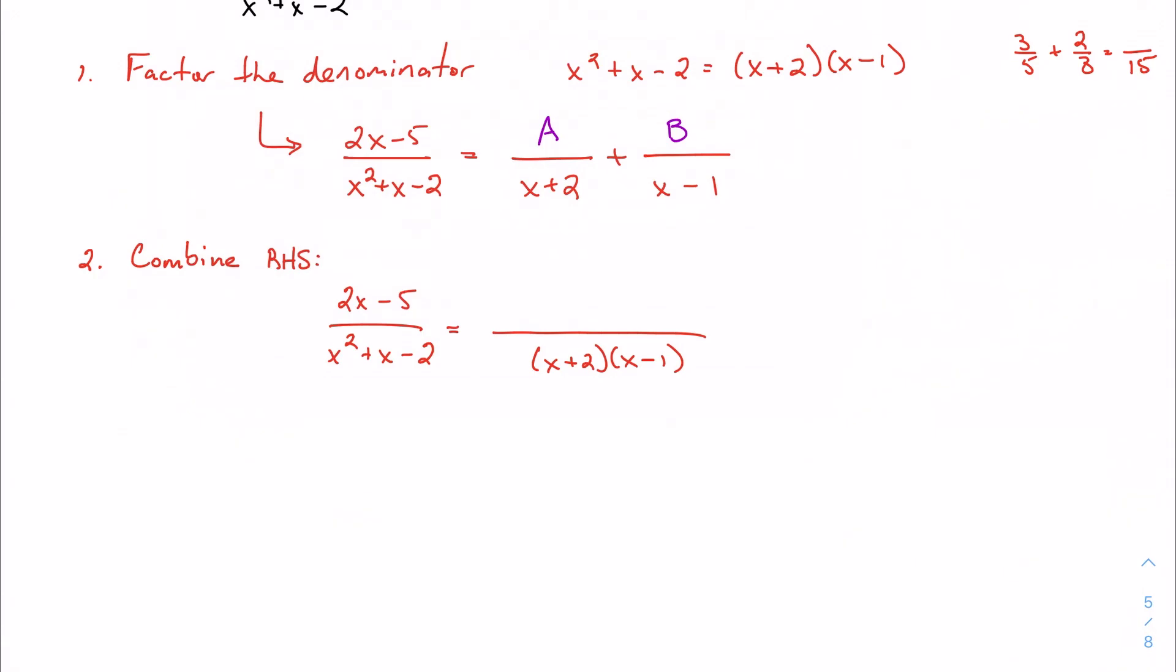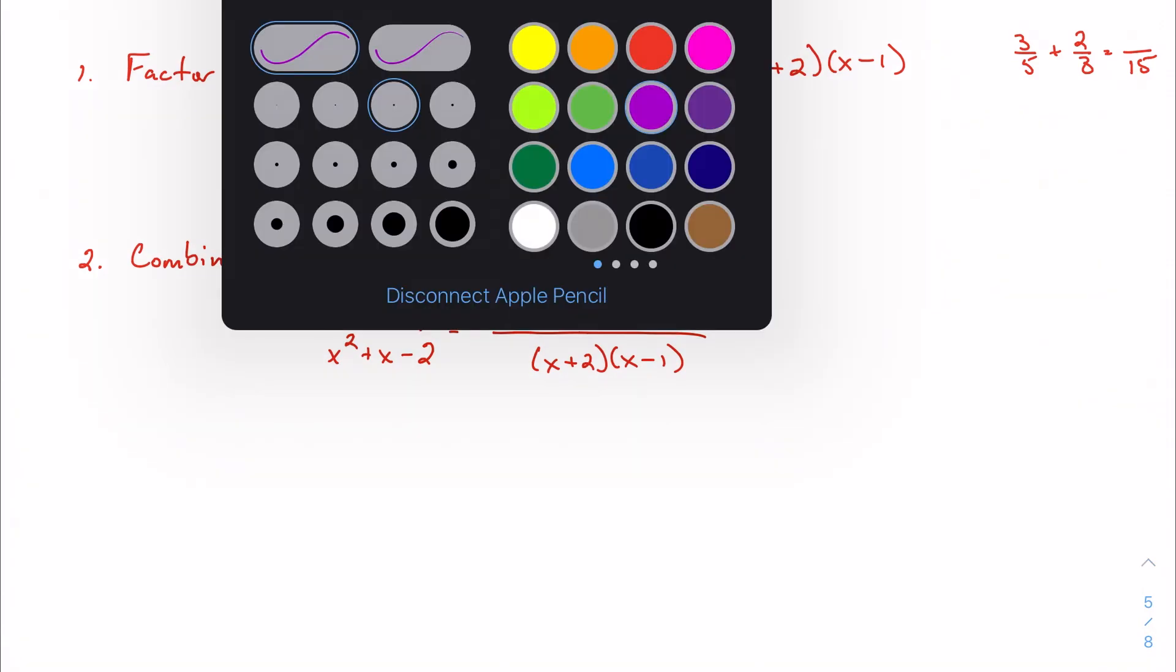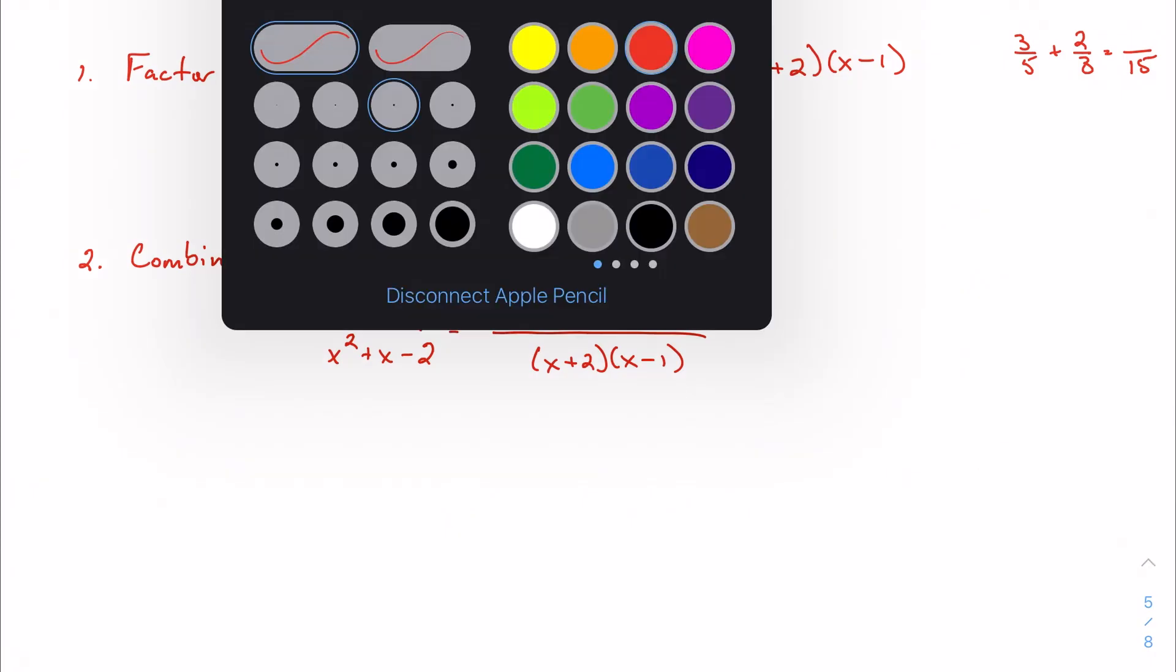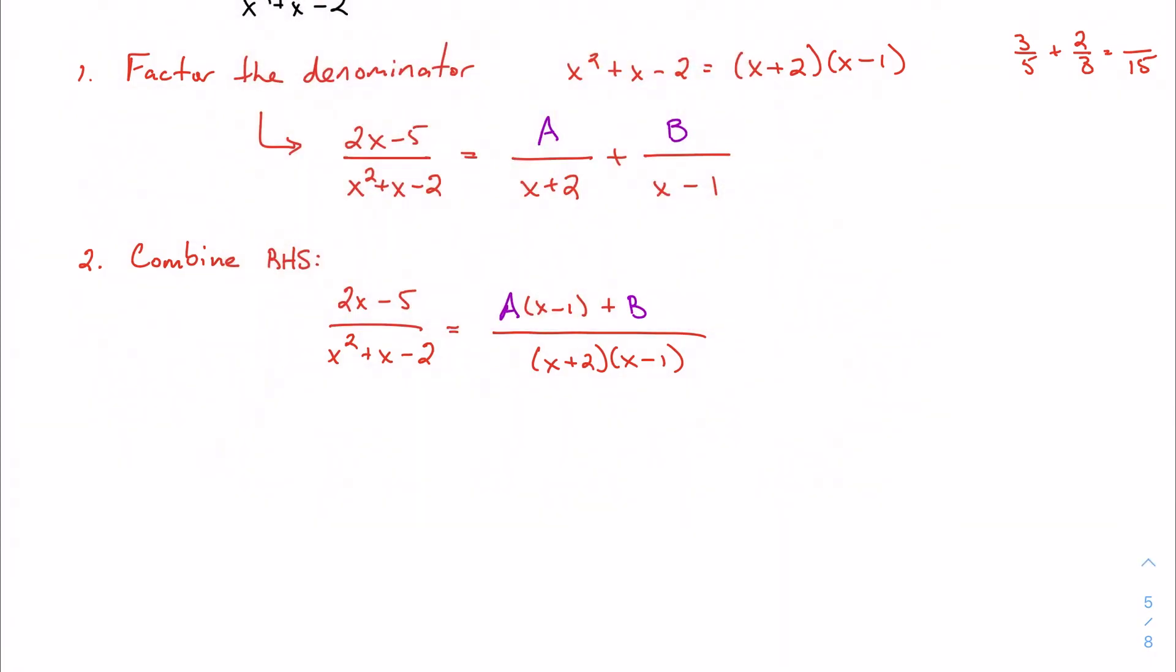And then if I use that kind of cross-multiplication, I'm going to get A times x minus one, and B times x plus two. Our denominators are equal, right? These are equal.